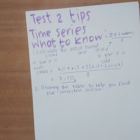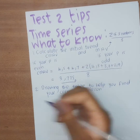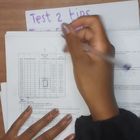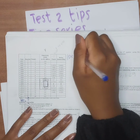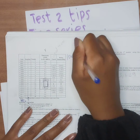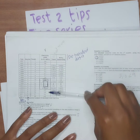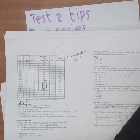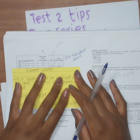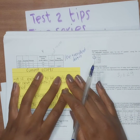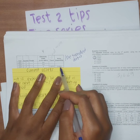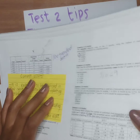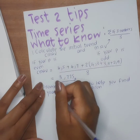Using our same example, you'll have your initial trend and your de-trended data. List this data into the seasonal table. You look at the de-trended data starting at the third quarter — third, fourth, first, second — and write it in that order in the table.